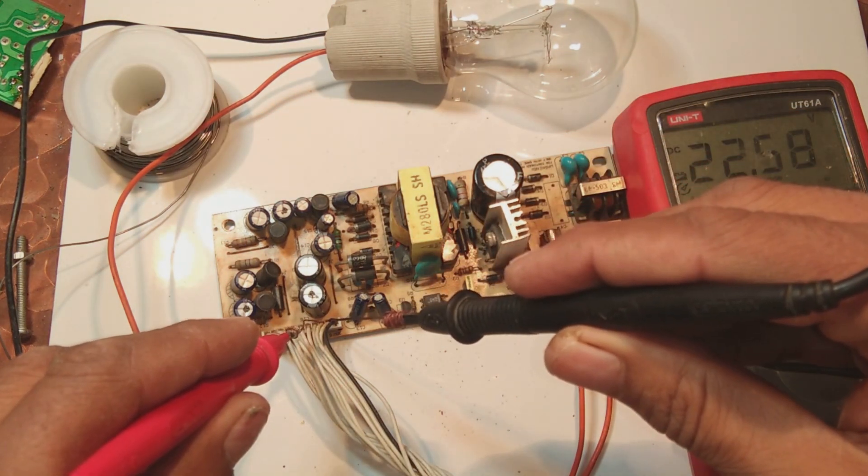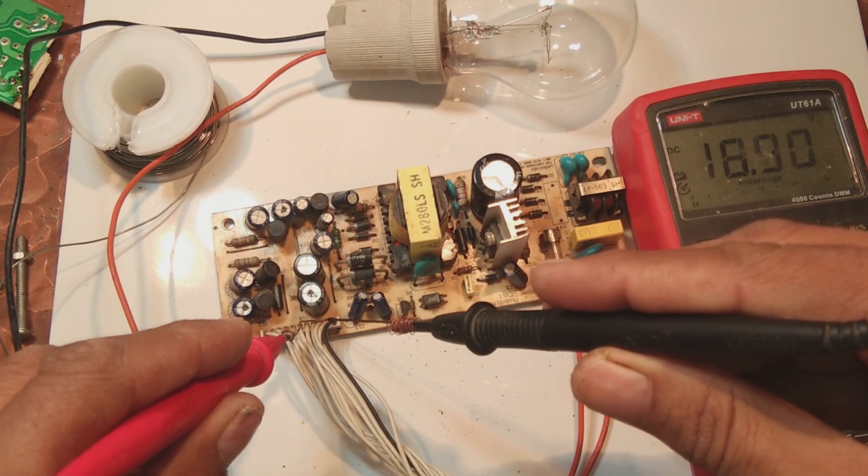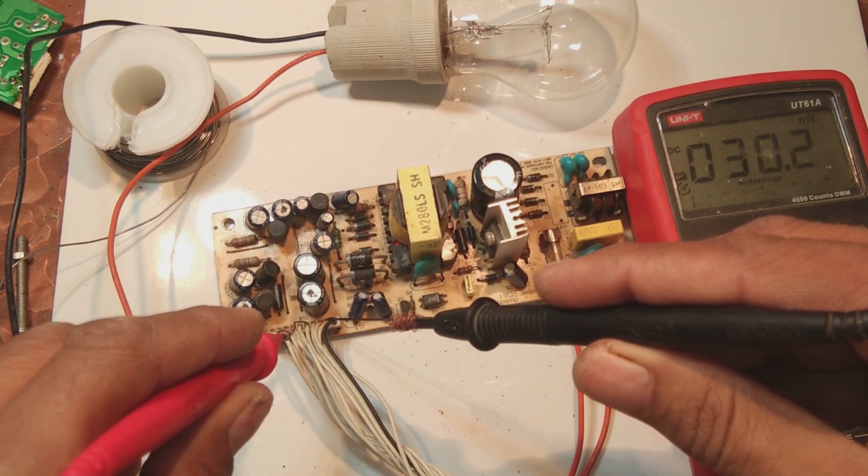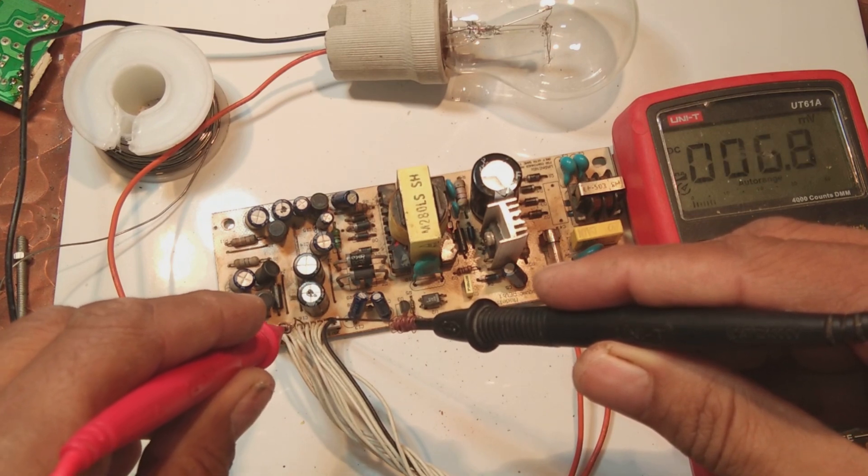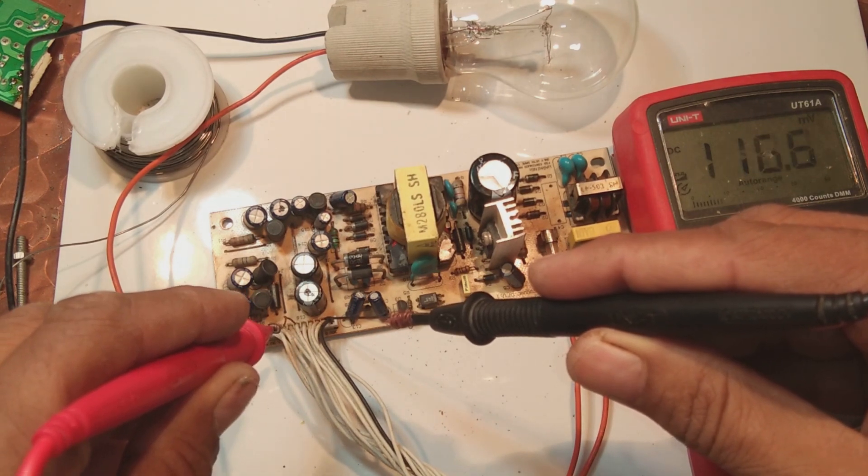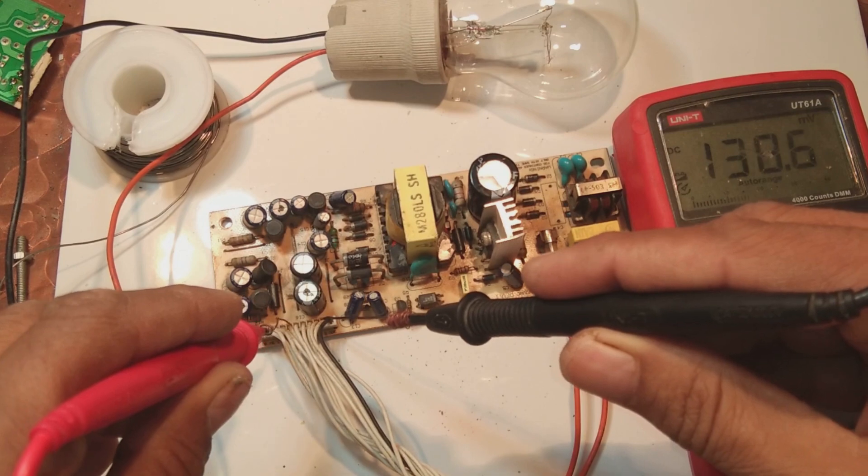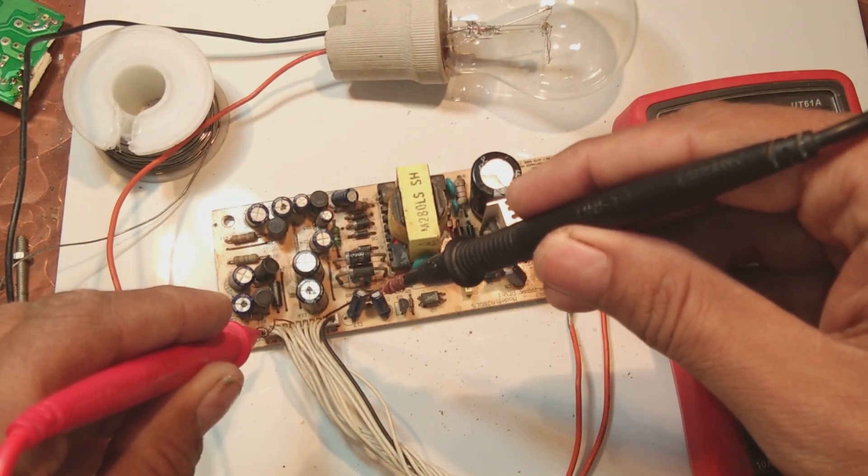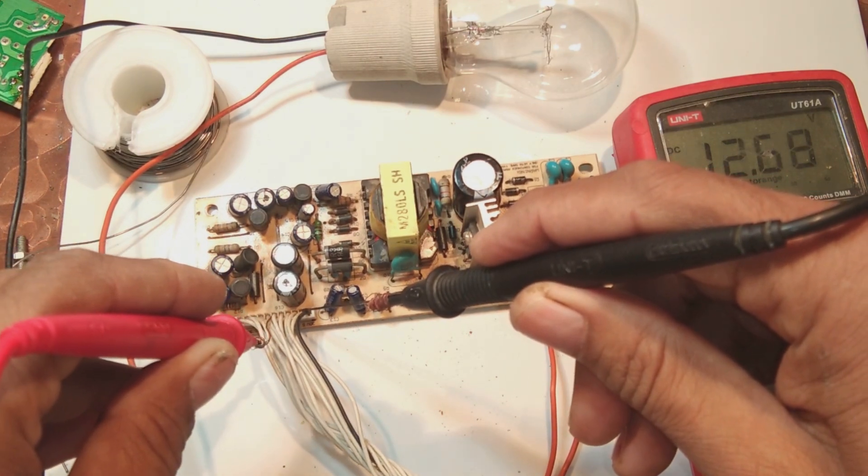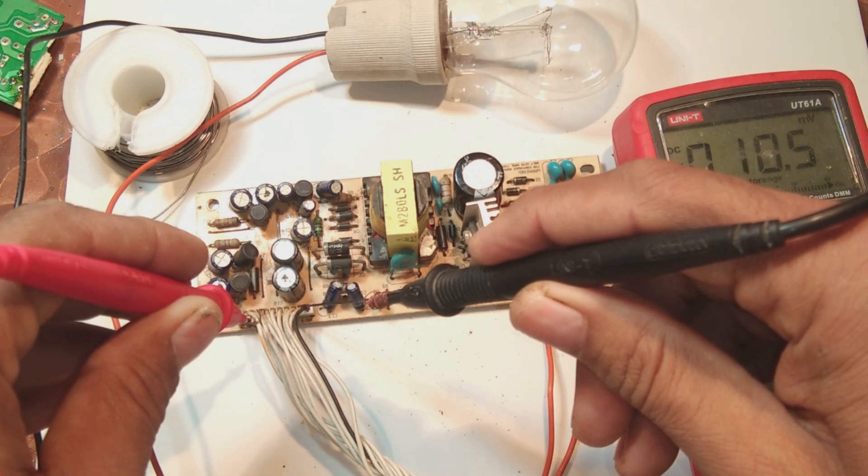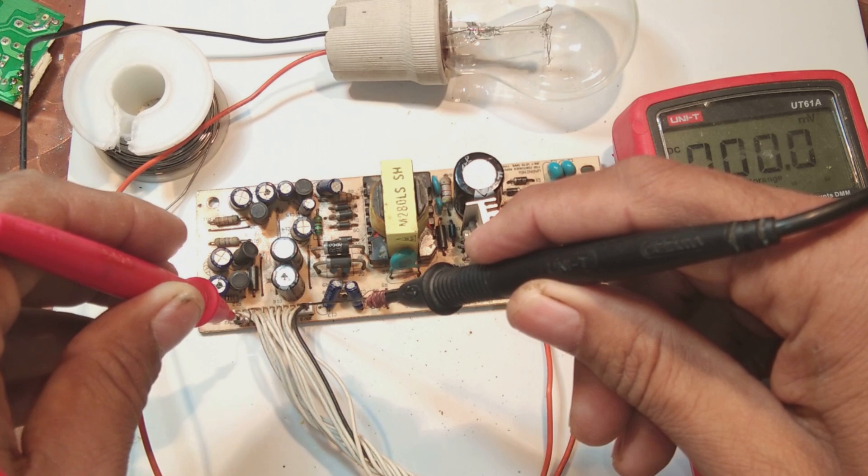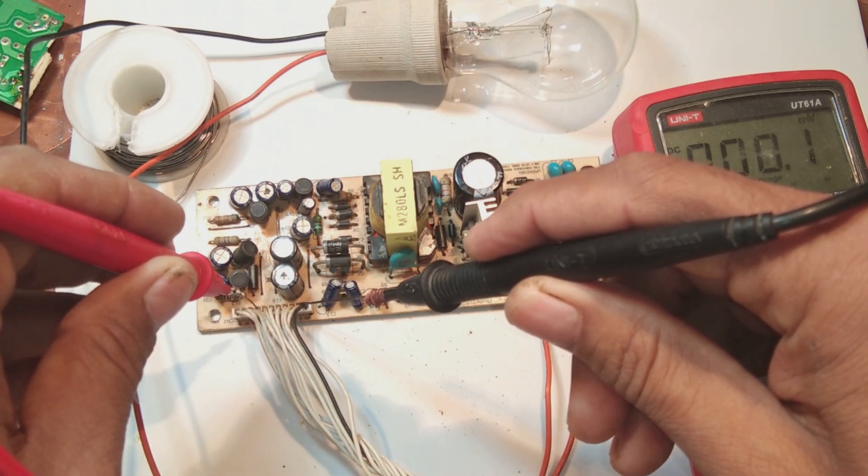Some pins will be grounded - those will show some millivolt reading or no reading or zero. We have to verify all the voltages. As you can see here, 12 volt is coming - 12.68 volt is coming, 12 volt is written. Other voltage is 8.6 volt is coming. Then next is ground. 3.6 volt is coming which is 3.3 written, but 3.6 it is showing - it's okay.